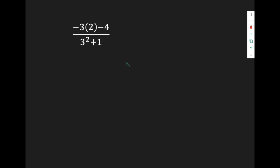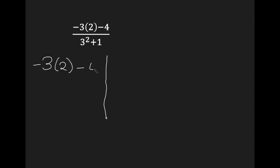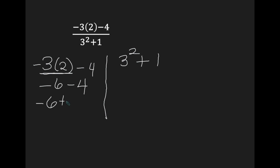Final example — I made sure to include one with a fraction bar. Whenever I have a fraction bar, I break it in two: the numerator on one side and the denominator on the other, and I evaluate them separately. So in the numerator I have multiplication and subtraction — multiplication would be first. Negative 3 times 2 is negative 6. Now negative 6 take away 4: the opposite of positive 4 is negative 4, and negative 6 plus negative 4 is negative 10. My numerator is negative 10.